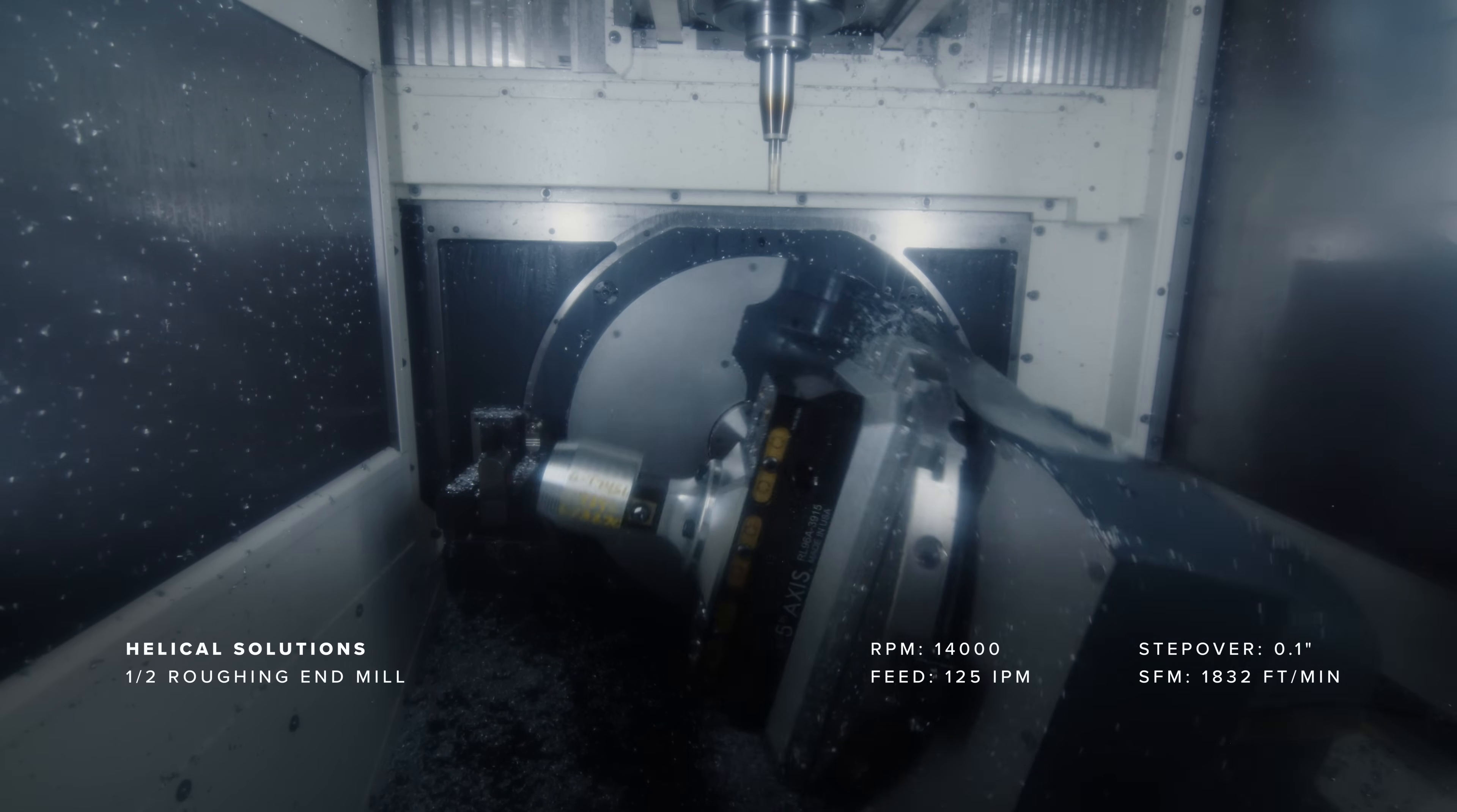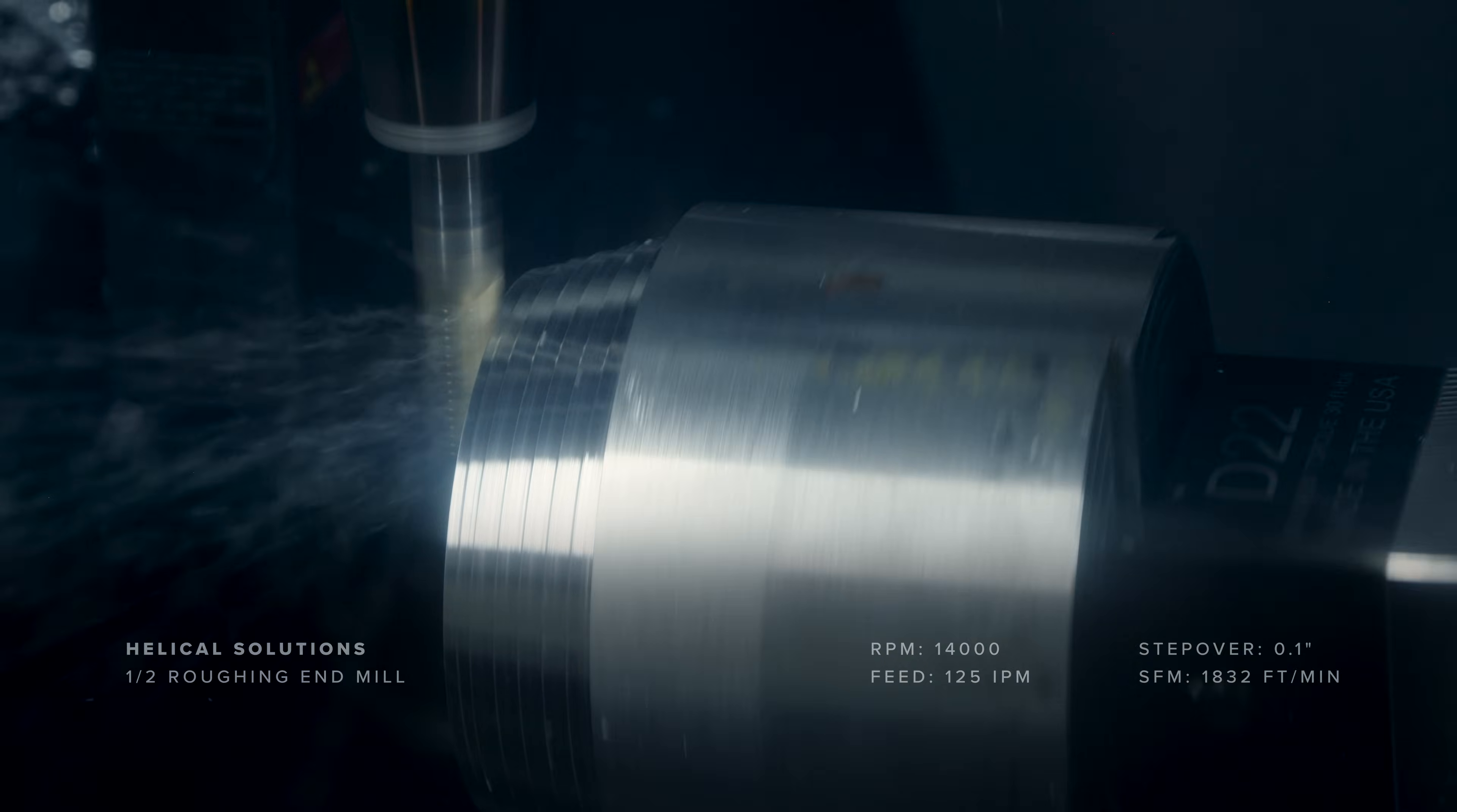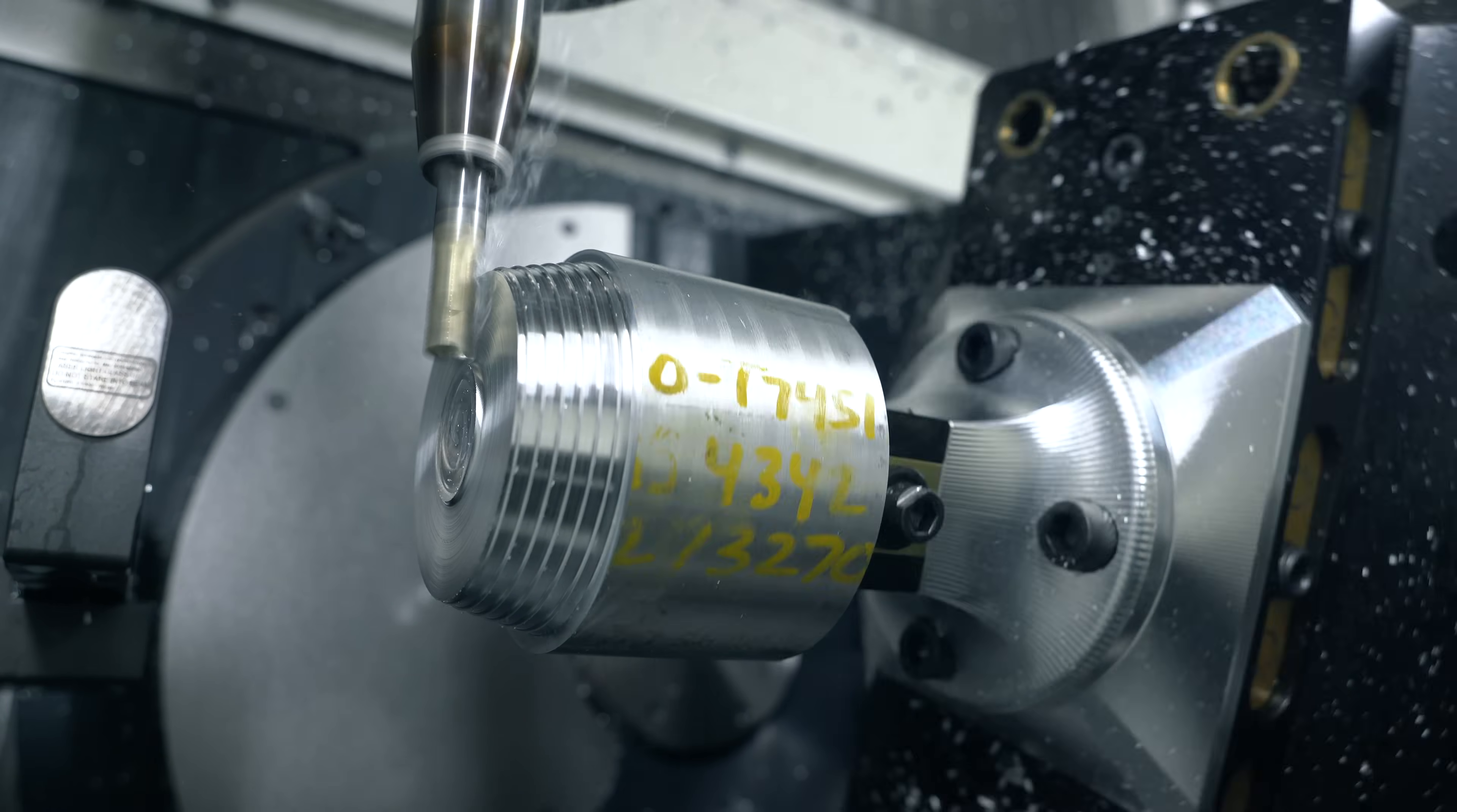Once that's done we rotate the part and go into four axis simultaneous roughing, basically using the mill like a lathe with a short tool for better rigidity.